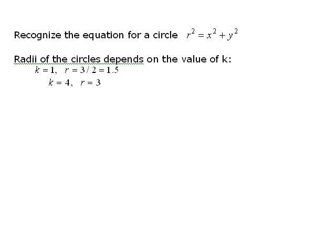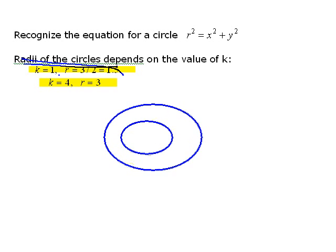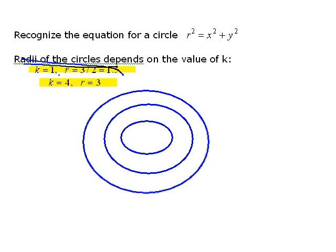Here's just some examples. If k is one then the radius is 1.5. If k is four then the radius is three. That just gives you, the contour lines in this case are just going to look like circles, with the same center, nested circles.